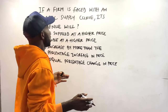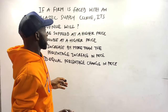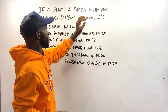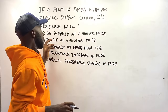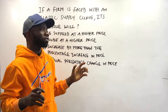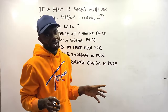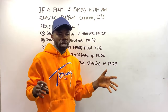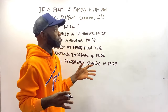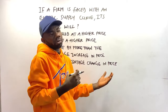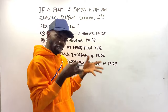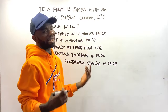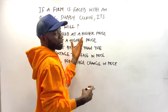This next question is another interesting one from the same theory of supply, covering the elasticity aspect. The examiner asks: if a firm is faced with an elastic supply curve, its revenue will do what? If you haven't watched our videos on elasticity, go find them. The theory of demand and supply is the main hub, and we try to explain questions from different angles so students build strong background knowledge.